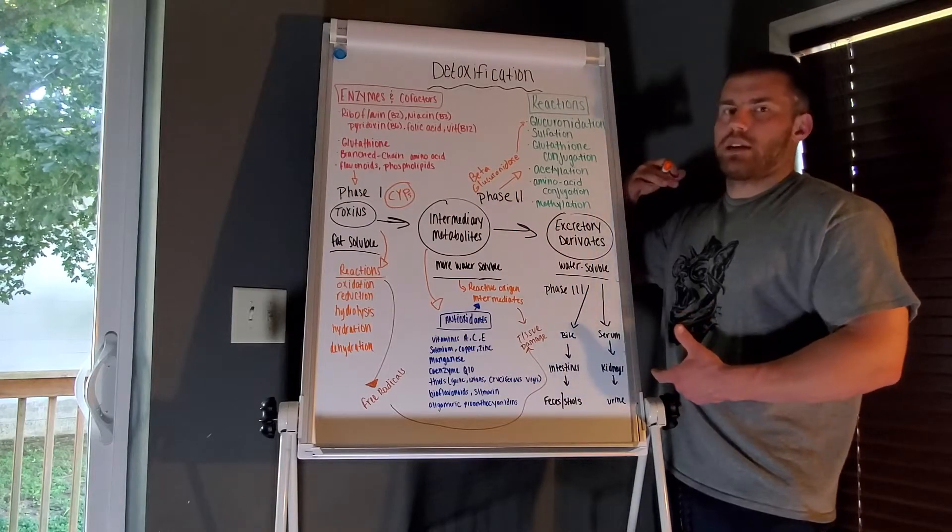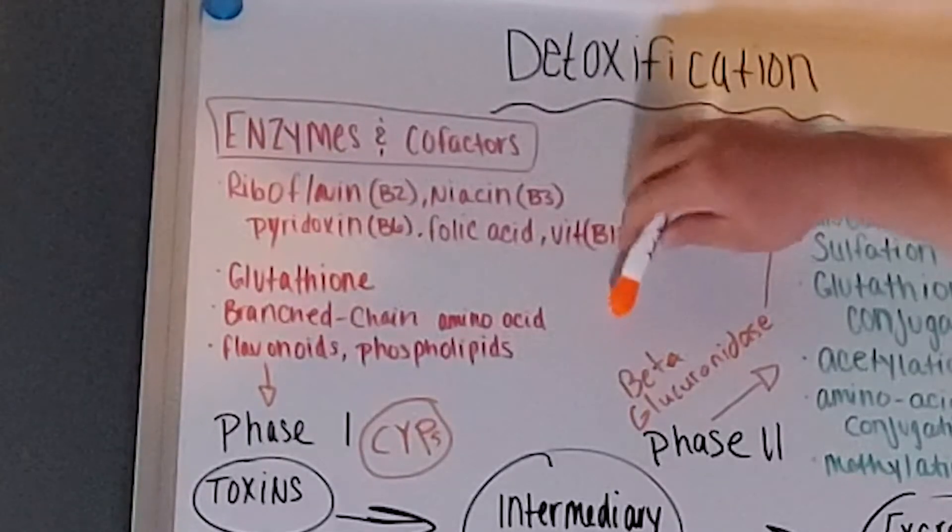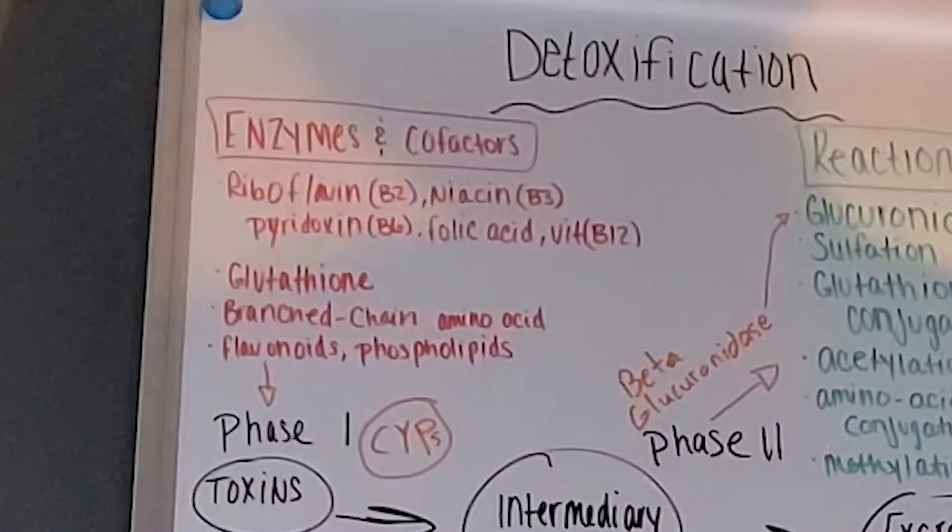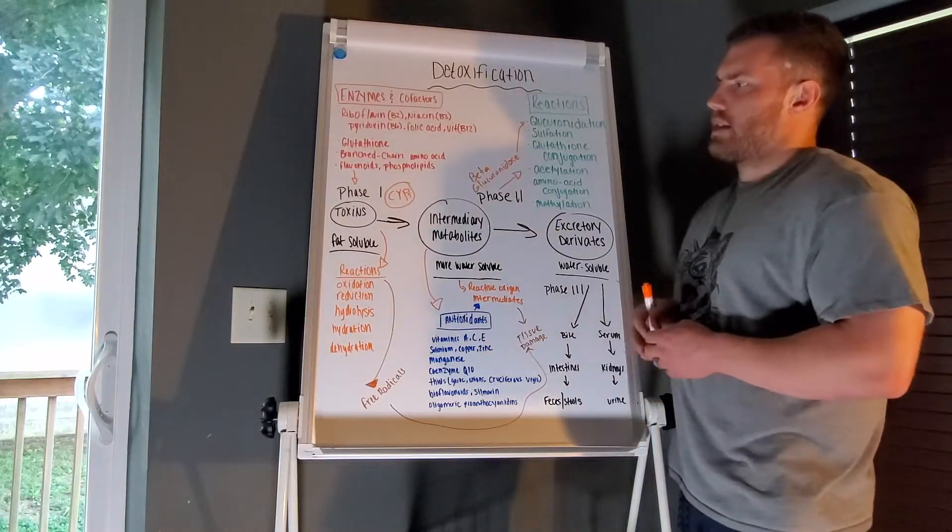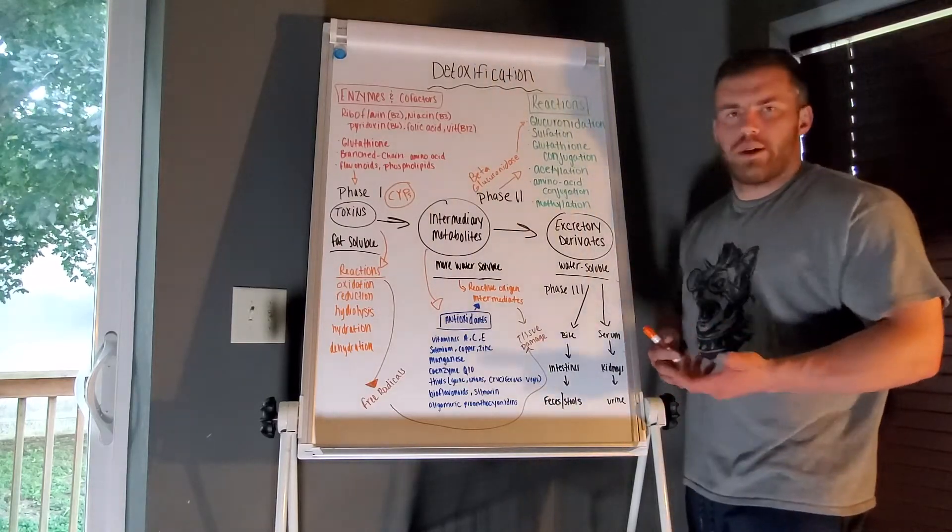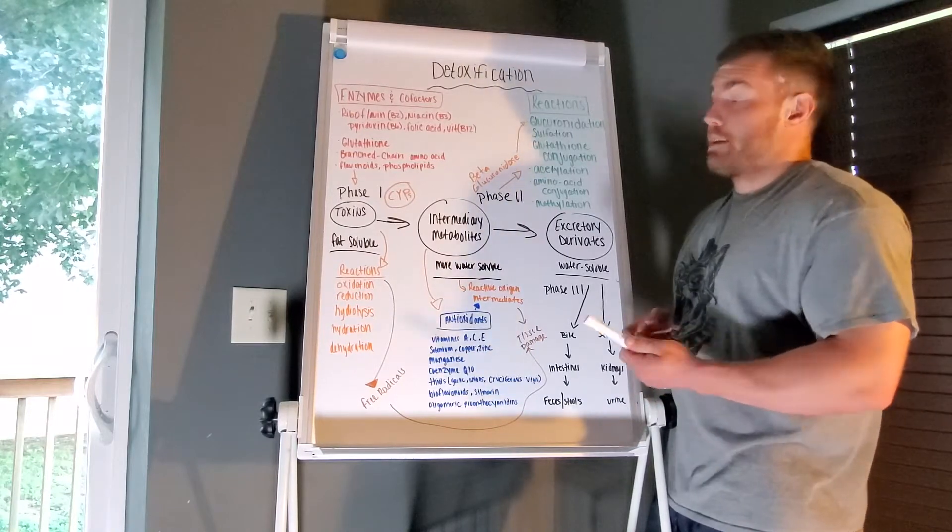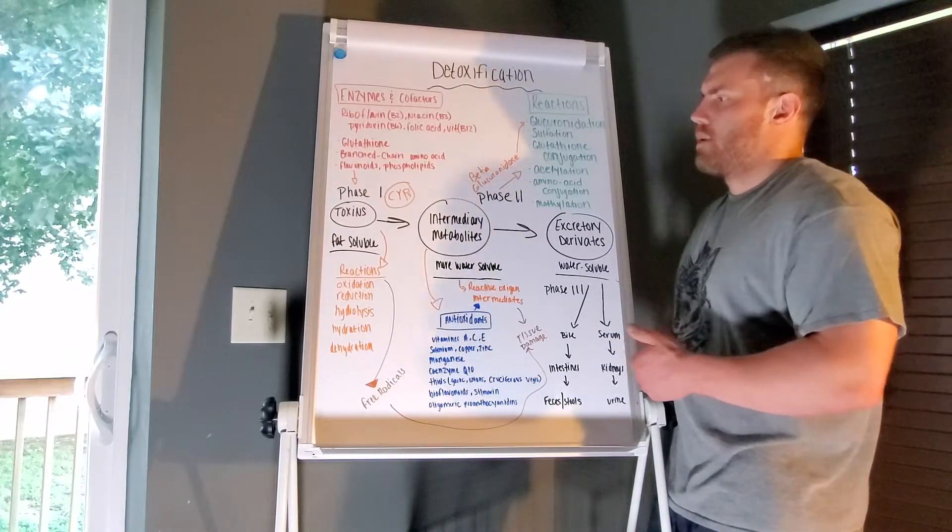Also glutathione, branch chain amino acids, flavonoids, and phospholipids. Once we get into this, we have our toxins, whatever we're trying to break down or get rid of. It can be other things, can be hormones and things as well. We want to break them down and get them into a more easily broken down state.